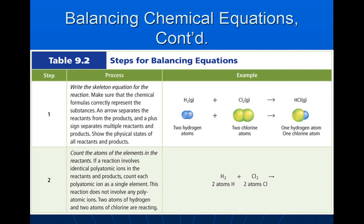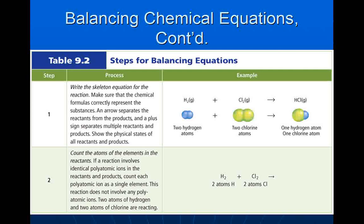The next step is we want to count the atoms of the elements in the reactants. If a reaction involves identical polyatomic ions in the reactants and products, count each polyatomic ion as a single element. This reaction does not involve any polyatomic ions — two atoms of hydrogen and two atoms of chlorine are reacting. As you can see, he wrote H2 plus Cl2 yields, and underneath wrote two atoms of H plus two atoms of Cl.